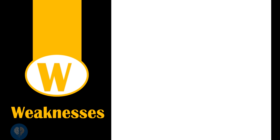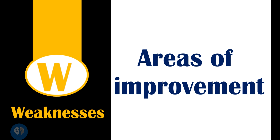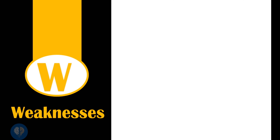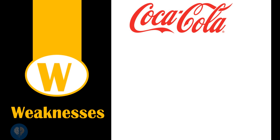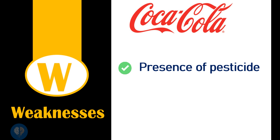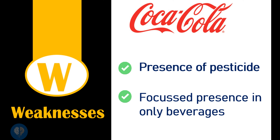The next element is Weaknesses. These are basically the areas of improvement. Going back to the example of Coca-Cola, the weakness might be the controversy of presence of pesticide in their drinks, and the focused presence in only beverages, unlike its competitor PepsiCo, which has diversified their product offerings with food such as potato chips, namkeen, and oats.